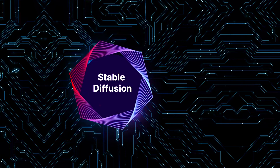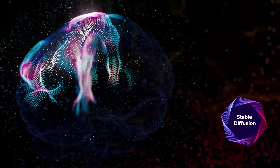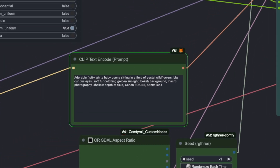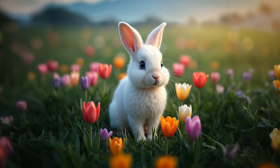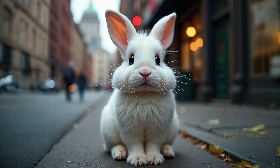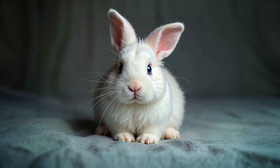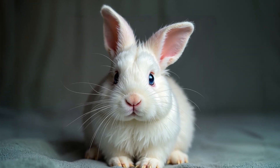What is Stable Diffusion? Stable Diffusion is a clever computer program that turns your words into pictures. You type in a description, like, a cute and adorable bunny, and boom — in just a few seconds, you get a high-quality image of an adorable bunny.